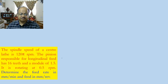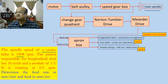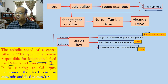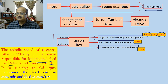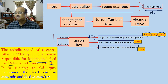Now let us look at the numerical problem. In a central lathe, the spindle speed is given as 120 rpm. The pinion responsible for longitudinal feed has 16 teeth and a module of 1.5. This pinion shaft is rotating at 0.5 rpm. There is no other information available — the main spindle is rotating at 120 rpm and the pinion shaft at 0.5 rpm. Nothing has been mentioned regarding the change gear quadrant, Norton-Tumbler drive, or Meander drive.